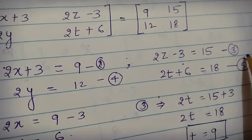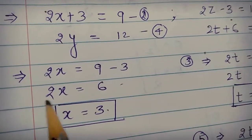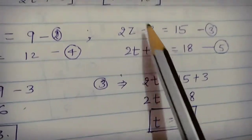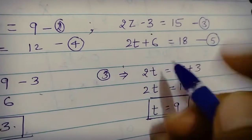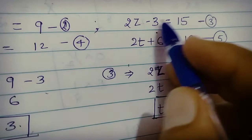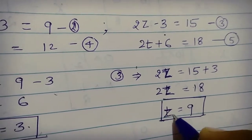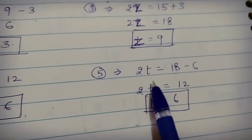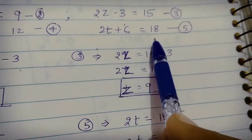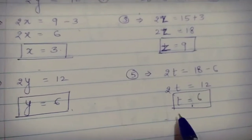The four equations are: 2x plus 3 equals 9, 2z minus 3 equals 15, 2y equals 12, and 2t plus 6 equals 18. Solving these: 2x equals 6 so x equals 3; 2z equals 18 so z equals 9; 2y equals 12 so y equals 6; and 2t equals 12 so t equals 6. Our solutions are x equals 3, z equals 9, y equals 6, and t equals 6.